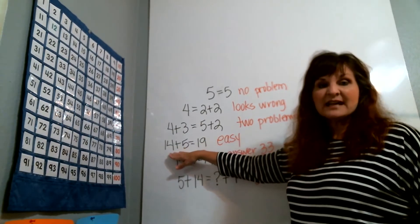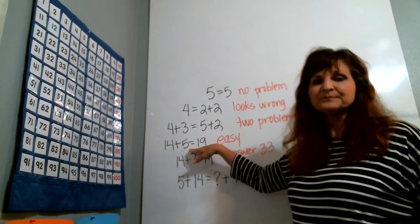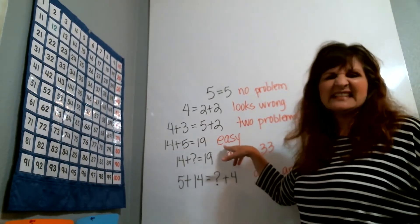They're fine with something that looks like this. 14 plus 5 equals 19. It has the same value as 19. They say, oh, that's easy.